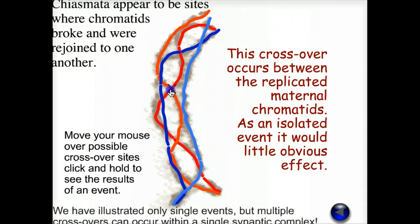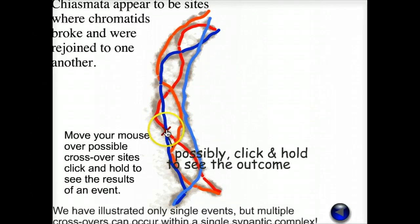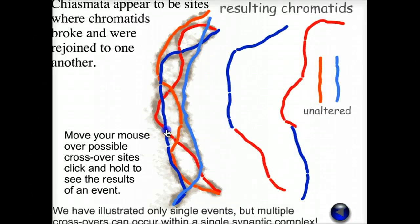This crossover occurs between replicated maternal chromatids. As an isolated event, it would have little, if any, obvious effect because it doesn't change the chromosomes. This point leads to an exchange between homologous chromatids.